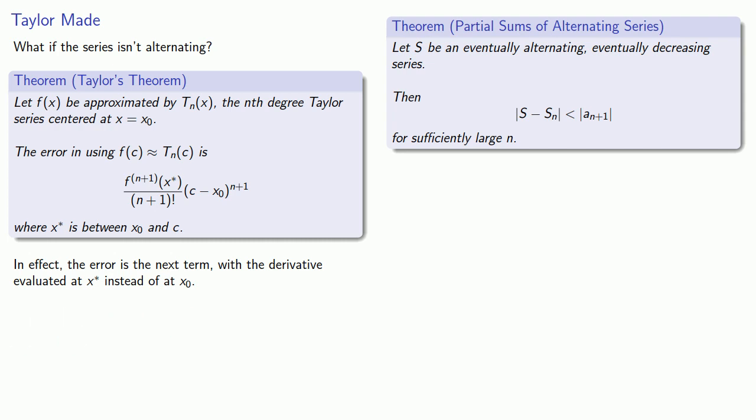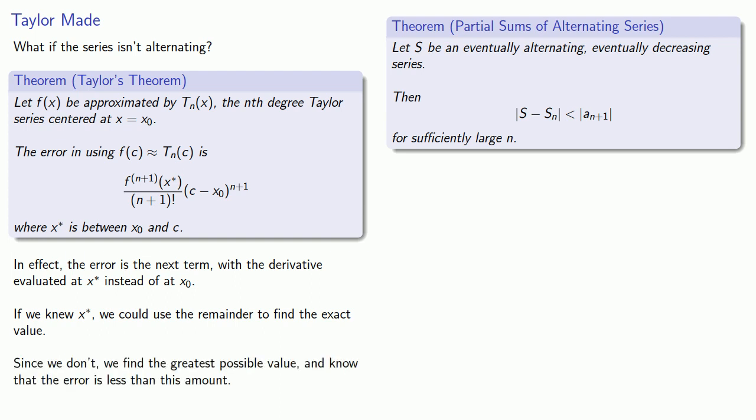Now this sounds really good because it suggests that if we know what x star is we could use the remainder to find the exact value of the function. Unfortunately we don't generally know what x star is, so in practice we're going to find the greatest possible value of the remainder and note that the error has to be less than whatever this amount is.